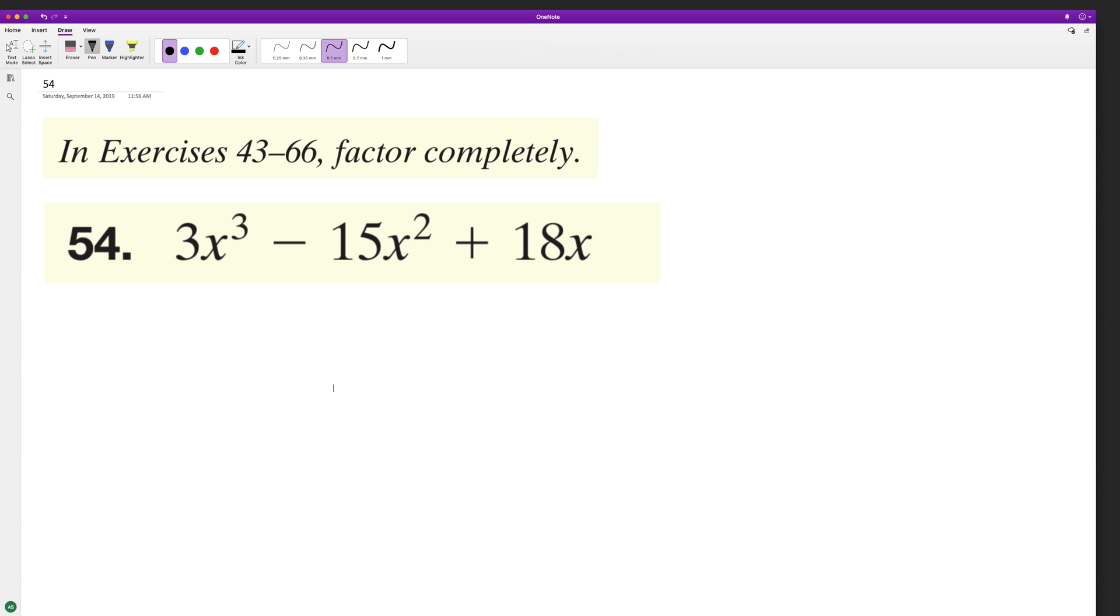To factor the following trinomial completely. First thing we can do is it looks like every term has an X and every term has a factor of three. So we can factor that out. We end up with X squared minus five X plus six.